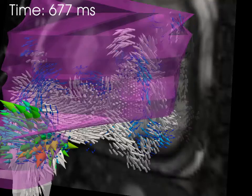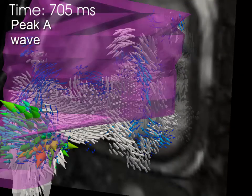Atrial contraction brings much stronger flow and vorticity. In particular, note the strong regurgitant flow back down the inferior vena cava.